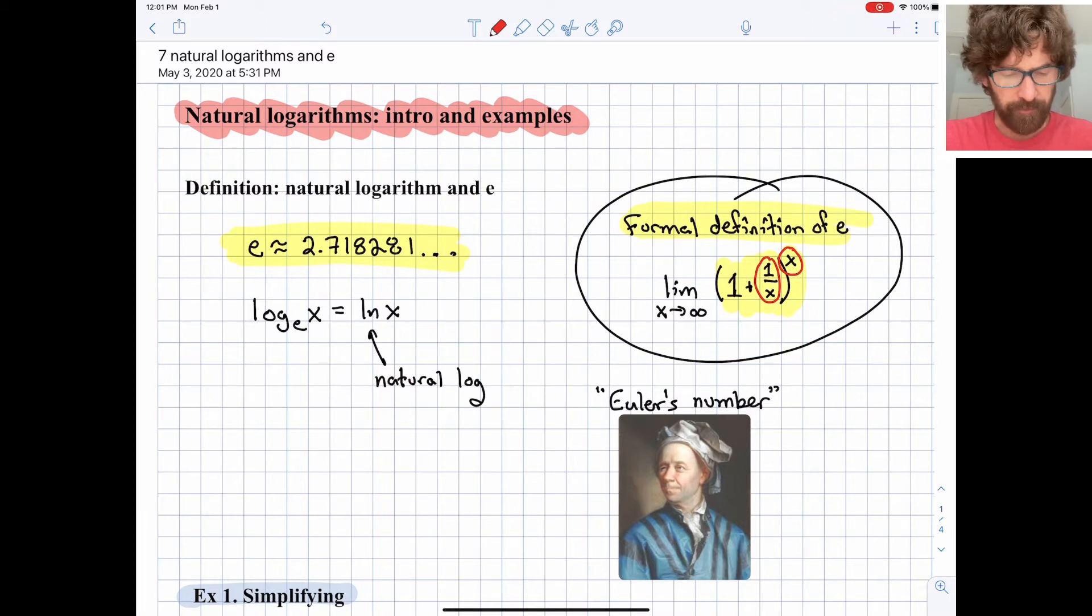So that's just a quick reminder of e. The natural log of e, or excuse me, the natural logarithm is abbreviated ln. So you should be able to see that button on your calculator. And when we're talking about the natural logarithm of x, that's equivalent to saying the log base e of x.